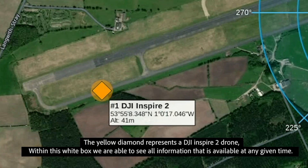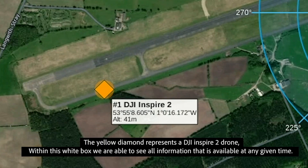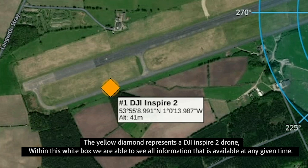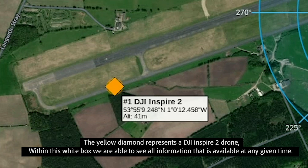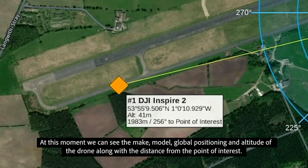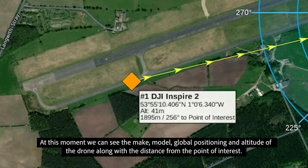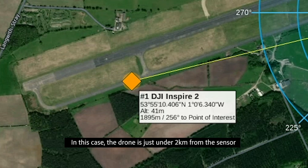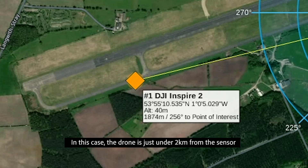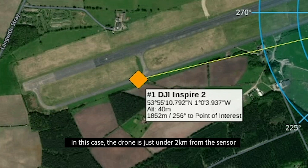The yellow diamond represents a DJI Inspire 2 drone. Within this white box, we are able to see all the information that is available at any given time. At this moment, we can see the make, model, global positioning and altitude of the drone, along with the distance from the point of interest. In this case, the drone is just under 2km from the sensor.